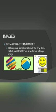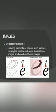A bitmap image is a simple matrix of tiny dots called pixels that forms a raster image. The next type is vector images, where drawing elements are objects such as lines, rectangles, and circles used to create an image. With vector images, no quality loss or pixelation happens when you zoom in.